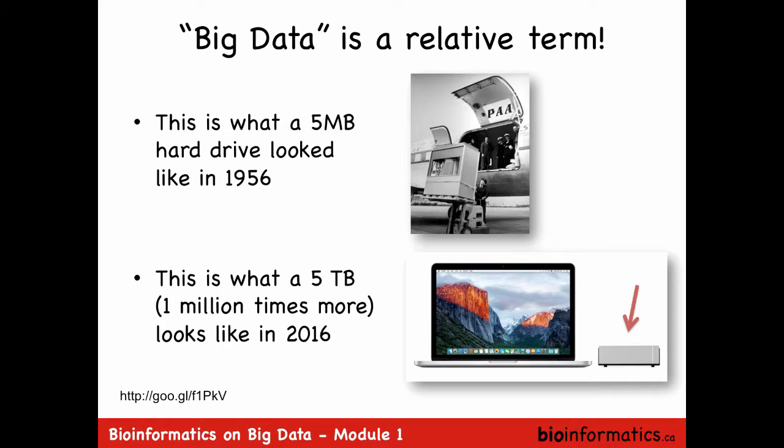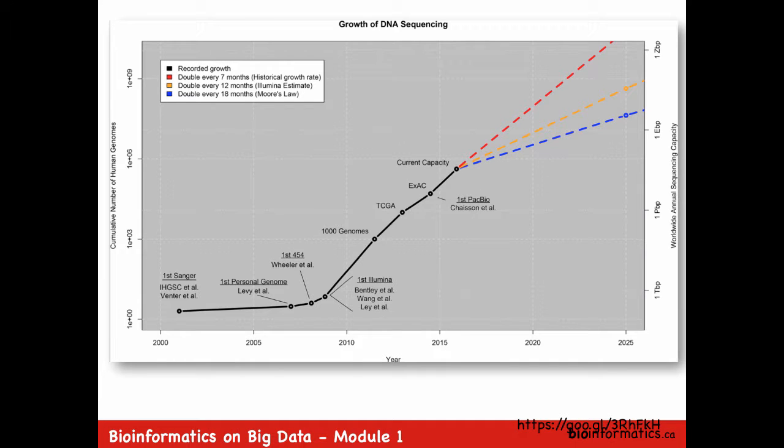Big data is a relative term. The first picture is a five-megabyte hard drive being forklifted into a plane. Next to it, the bottom picture is a five-terabyte drive - a million times more storage - in a fraction of the space. We're talking terabytes, petabytes, and soon exabytes, so it's useful to understand this terminology and the orders of magnitude they represent.